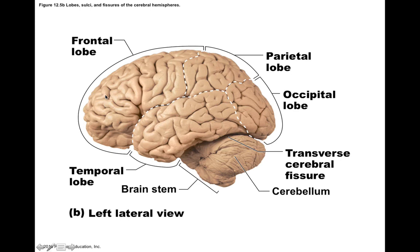We can divide the cerebral hemispheres into five major lobes: the frontal lobe, the parietal lobe, occipital, temporal, and one deeper called the insula. The insula is located between the frontal lobe and the temporal lobe in a space called the lateral sulcus.